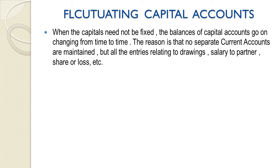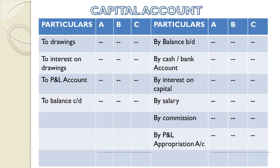Under fluctuating capital account, the capitals are not fixed; the balances of capital accounts go on changing from time to time. The reason is that no separate current accounts are maintained. Instead, all entries relating to drawings, salary to partner, share of profit or loss, etc., are recorded in the single capital account itself. In the fixed capital account method, the capital balance is kept fixed and only additional capital investments should be recorded there; all other entries go to the current account. But in fluctuating capital account, we create only one account — the capital account — and all entries are made in that single account.